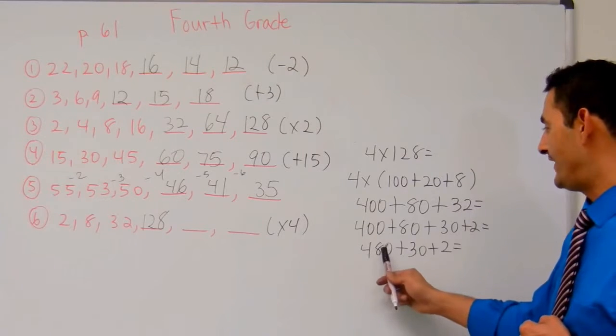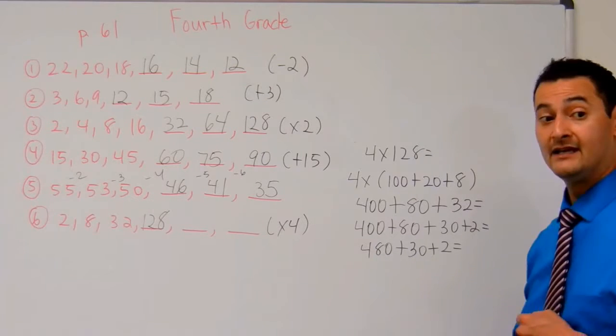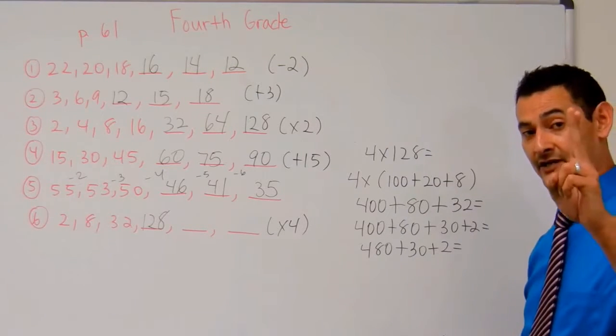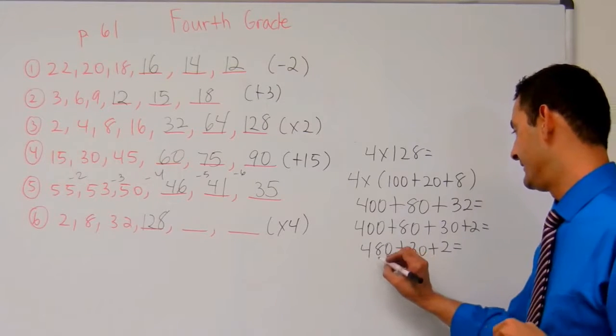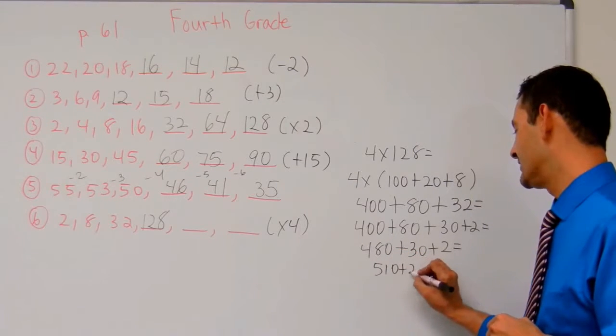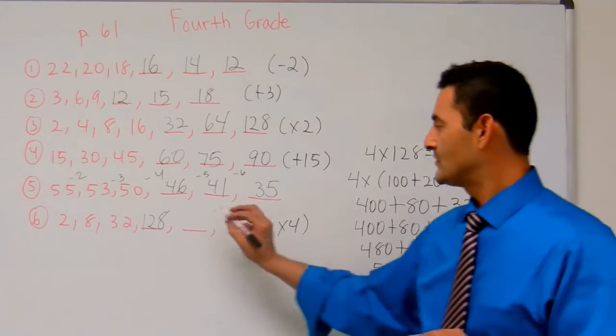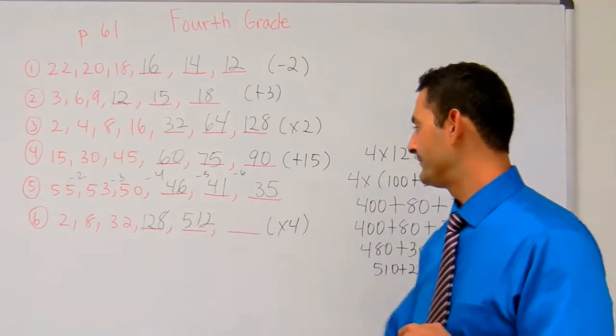I need 2 bundles of 10 to make 500. 480 plus 30, 510. 510 plus 2 equals 512. So that's going to be 512.